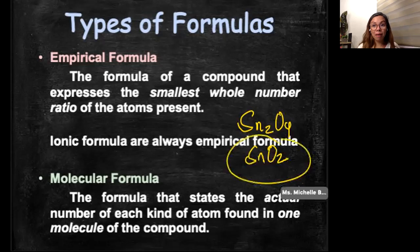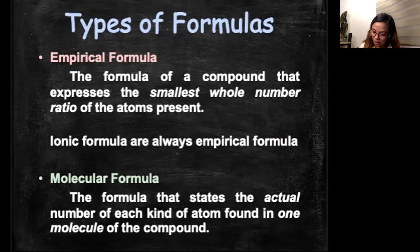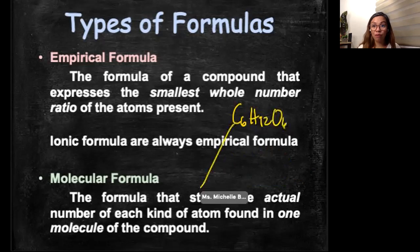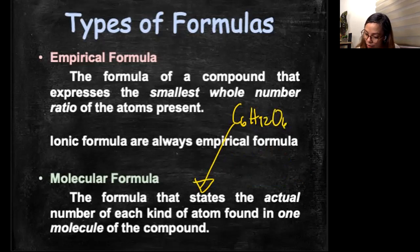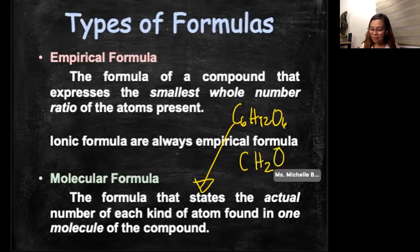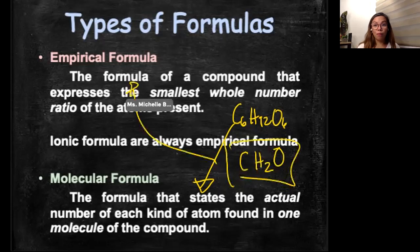That is the empirical formula, the simplest whole number ratio. Just like if you have molecular formula C6H12O6, this is a molecular formula. What's the empirical formula of this? So I believe that you can simplify this. So you will get C6 divided by 6 is 1, 12 divided by 6 is 2, and then O.